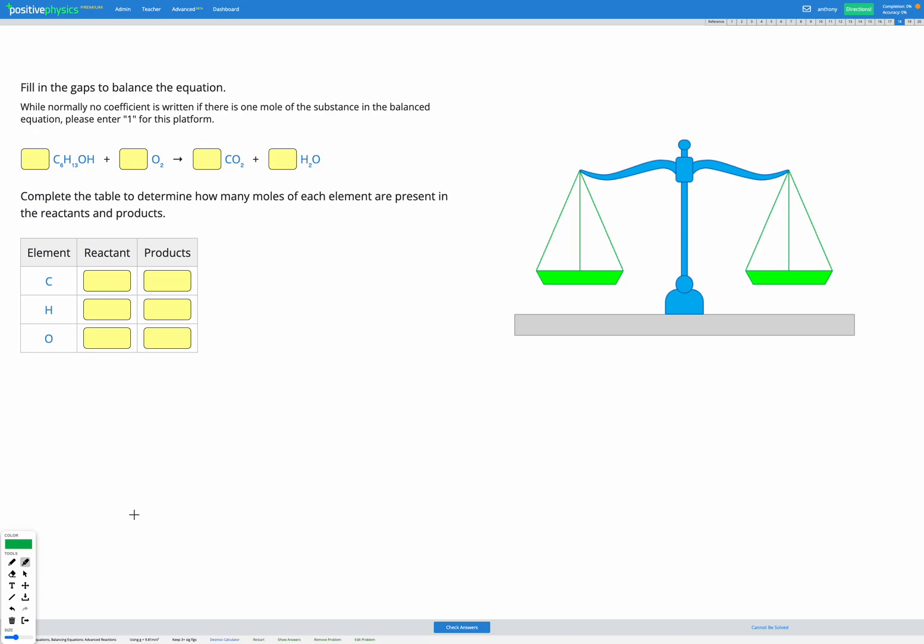In this question we're again balancing an equation. Here we have a hydrocarbon C6H13OH and oxygen O2, and that's going to make CO2 and H2O.